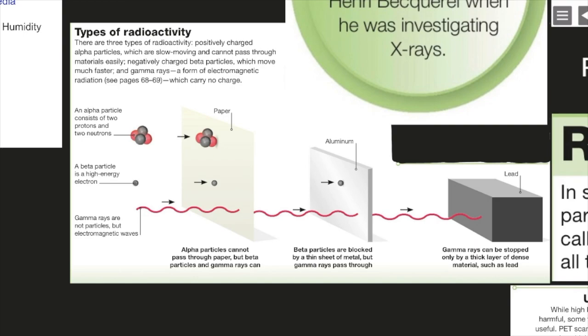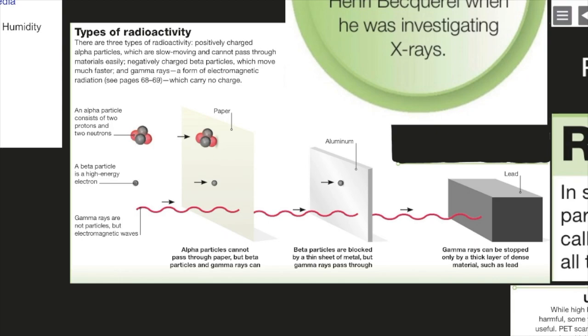There are three types of radioactivity. Positively charged alpha particles, which are slow-moving and cannot pass through materials easily. Negatively charged beta particles, which move much faster. And gamma rays, a form of electromagnetic radiation which carry no charge. An alpha particle consists of two protons and two neutrons without the electrons. It's essentially helium without its electrons. A beta particle is a high-energy electron. Gamma rays are not particles, but electromagnetic waves, a form of high-energy light.